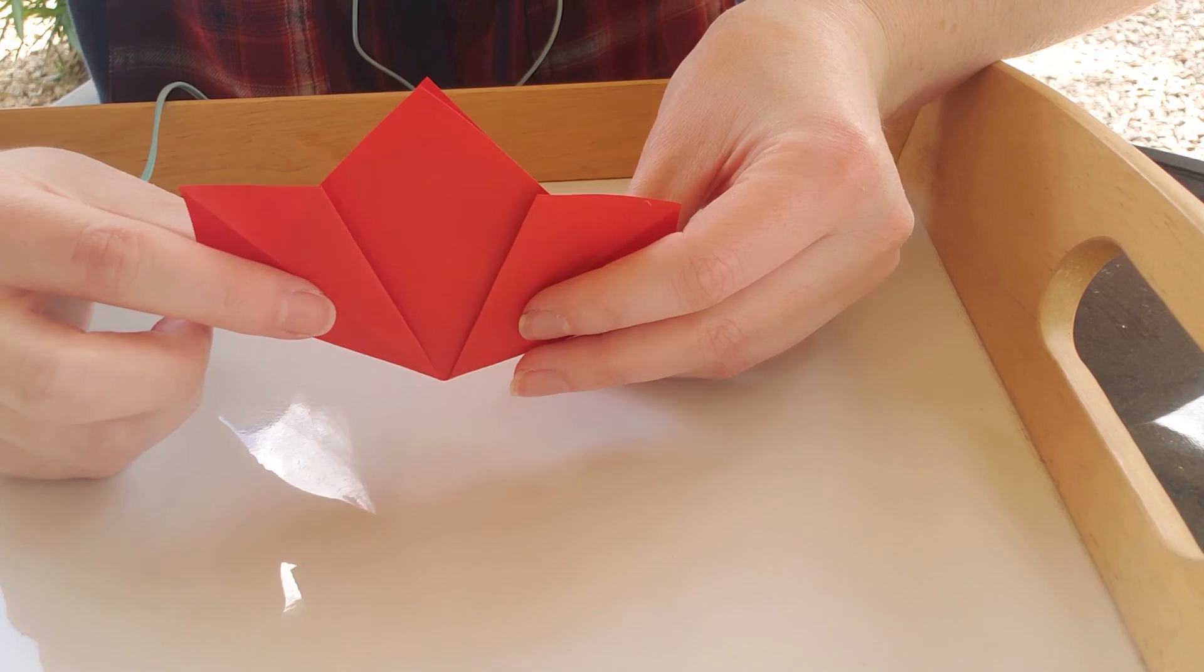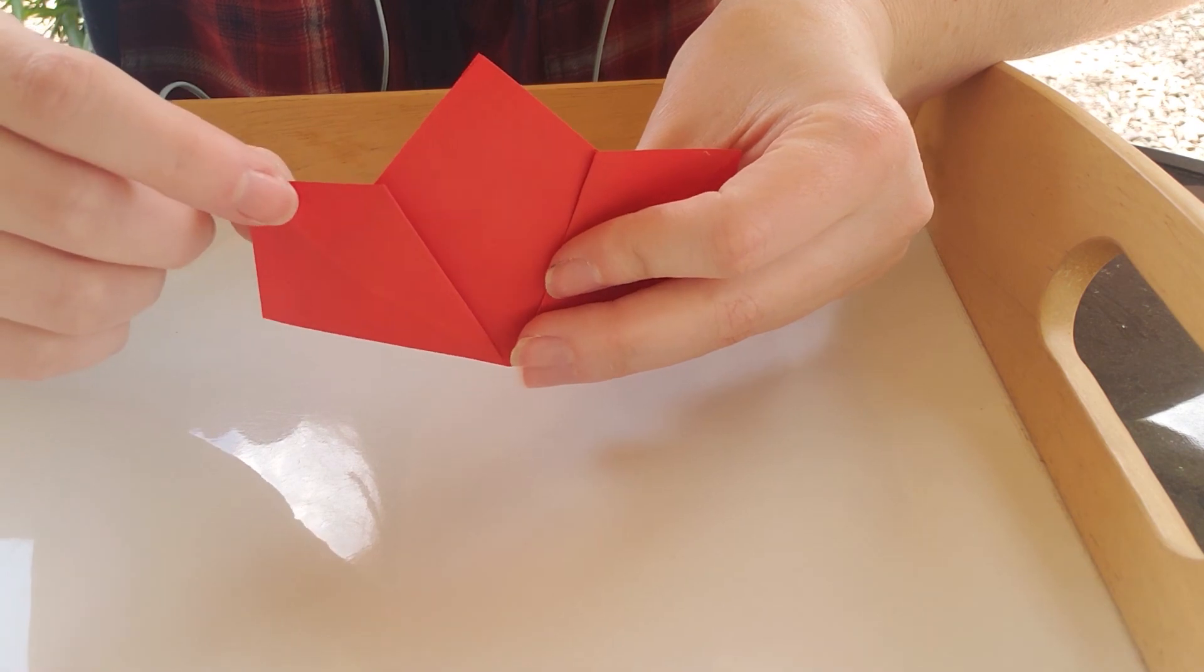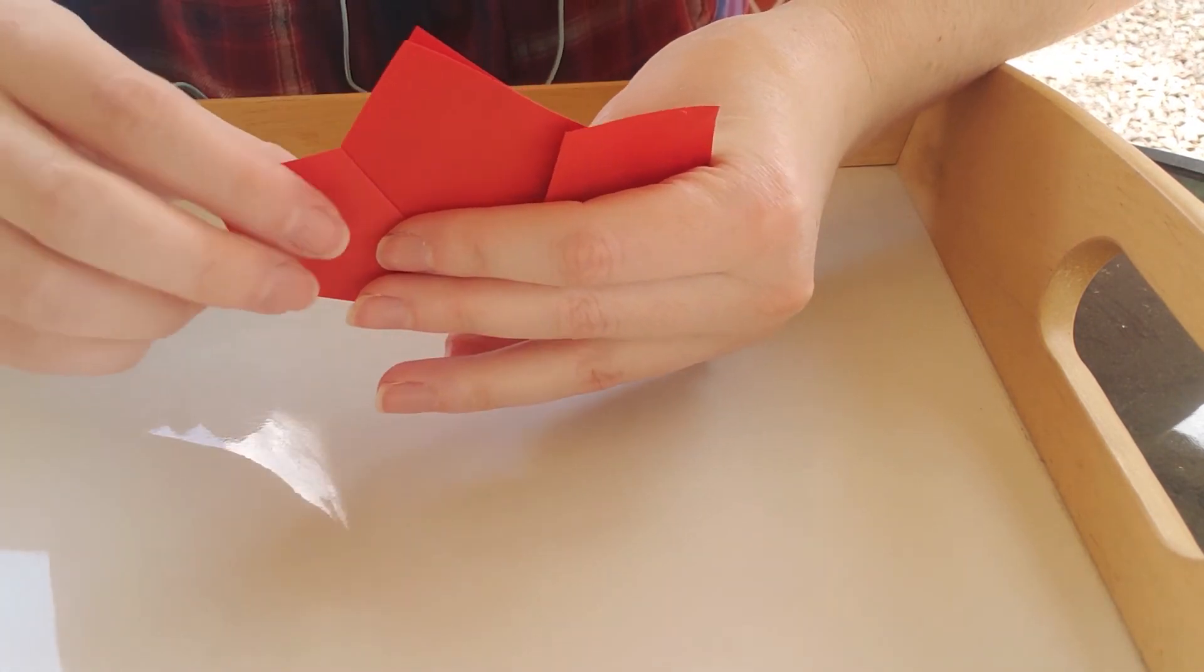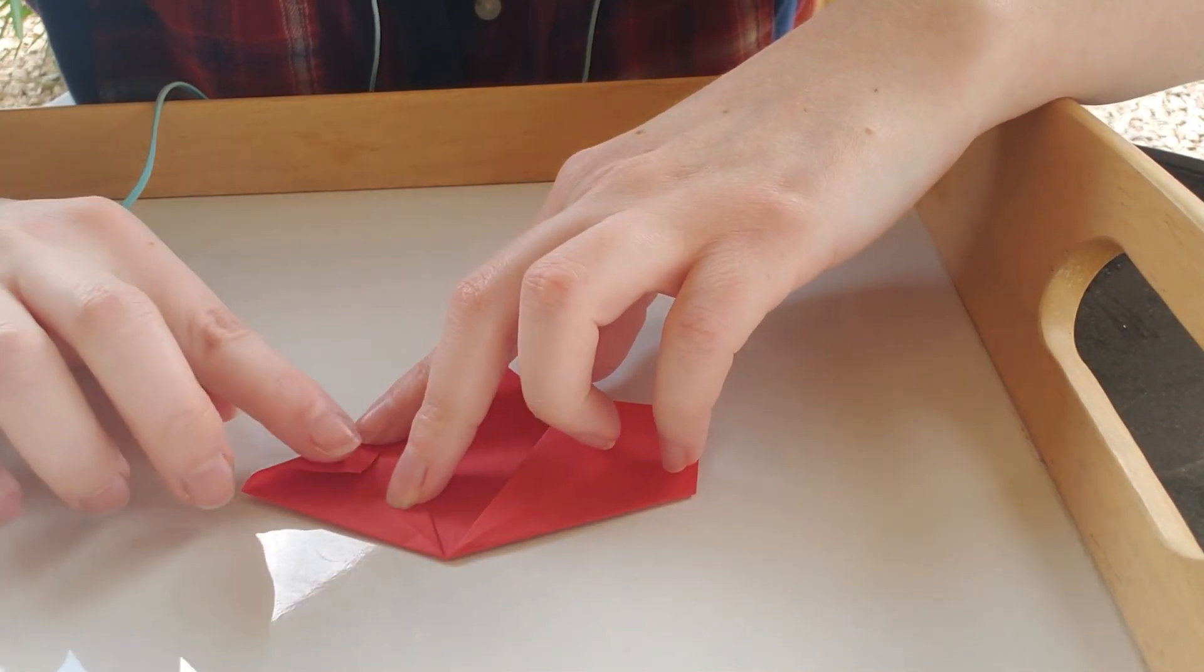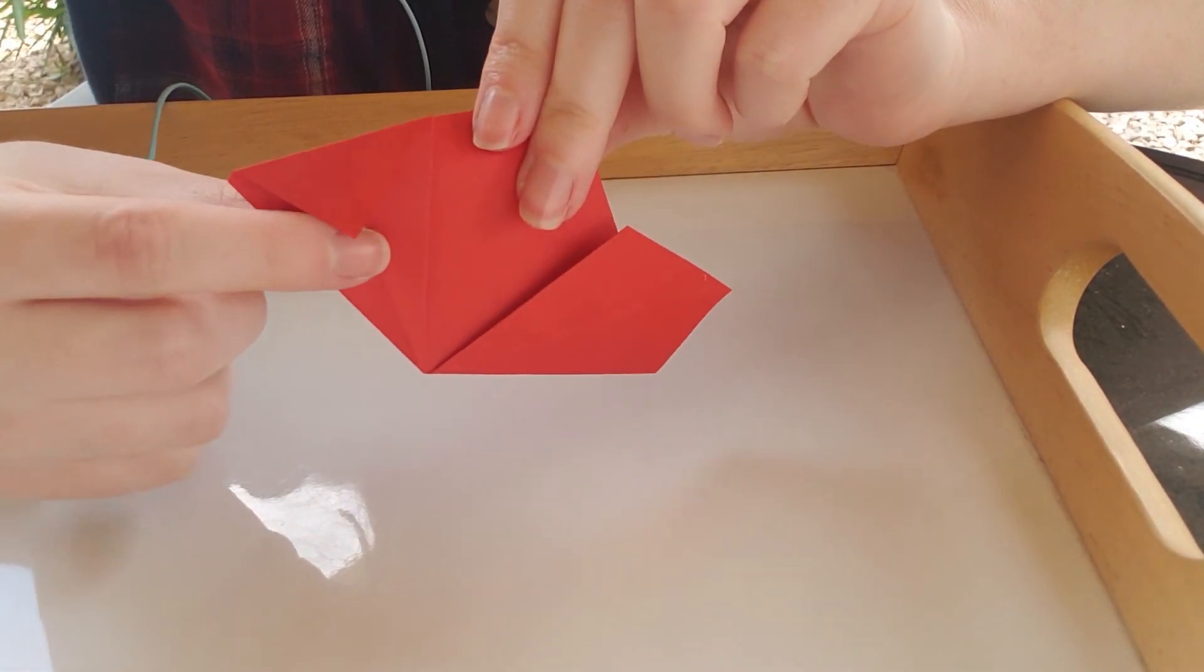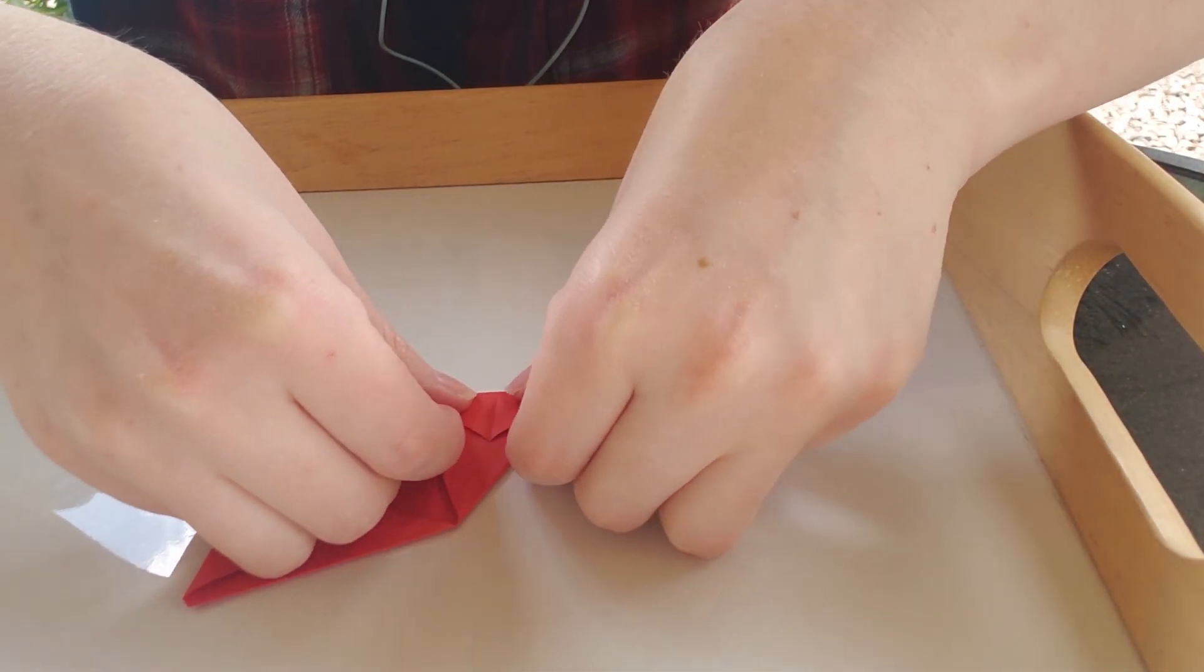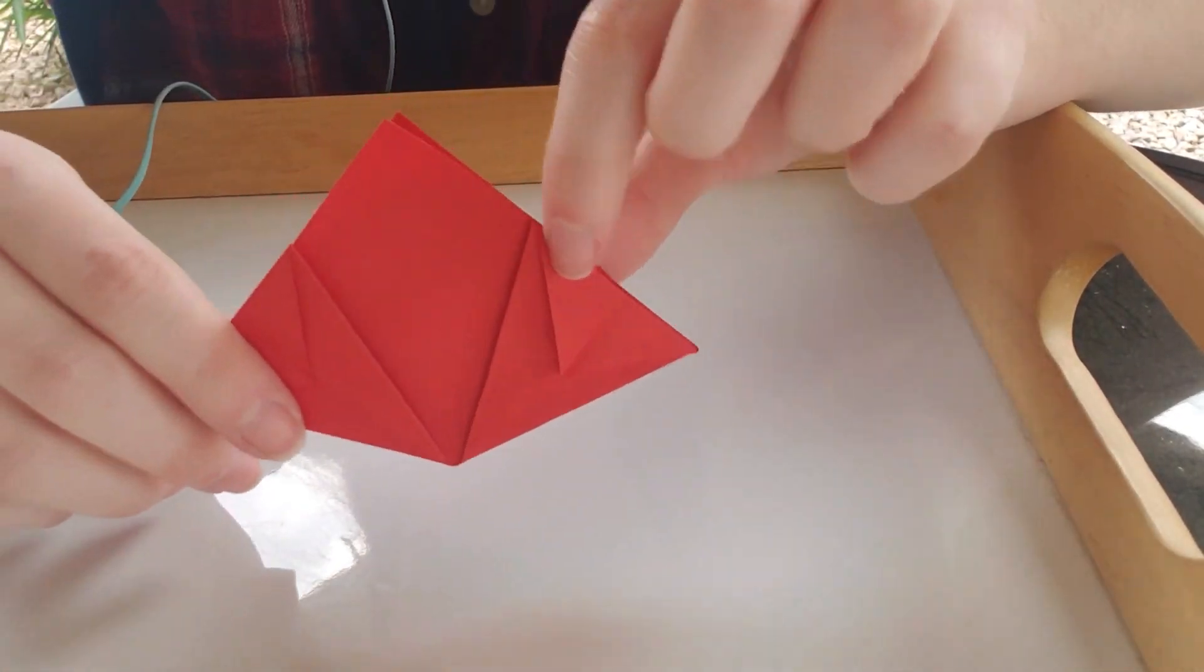Now once we've got this shape we're going to take these little tips and fold them down into triangles against this edge. So you want a triangle whose bottom base edge is flush with this side. So grab this, just pull it down, so that you've got a little triangle flap here. And we'll do it on the other side as well.